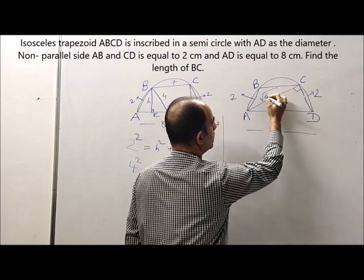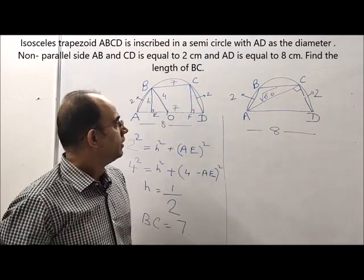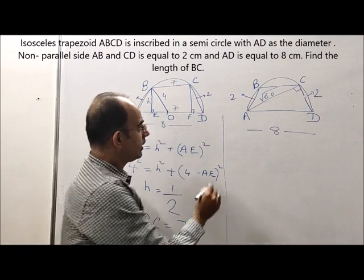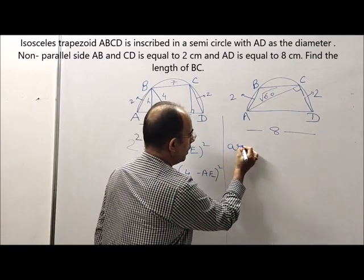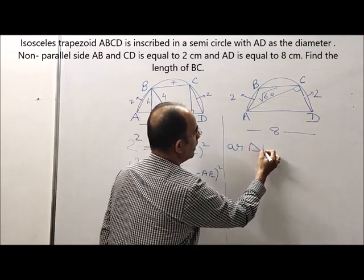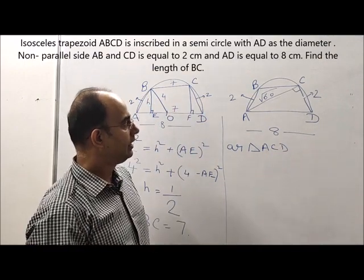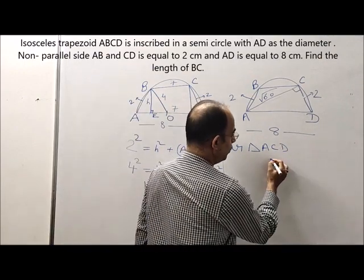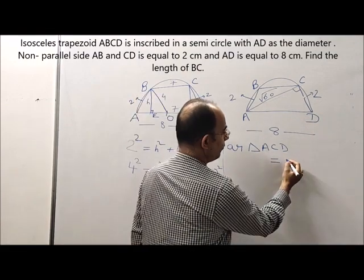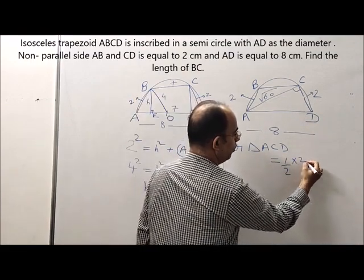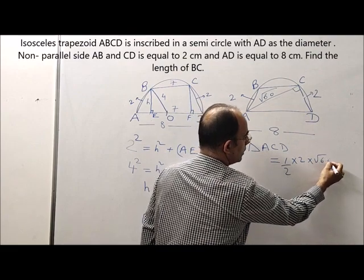AC would come out to be root 60. Now what is area of triangle? Area of triangle ABC would be equal to half into 2 into root 60.